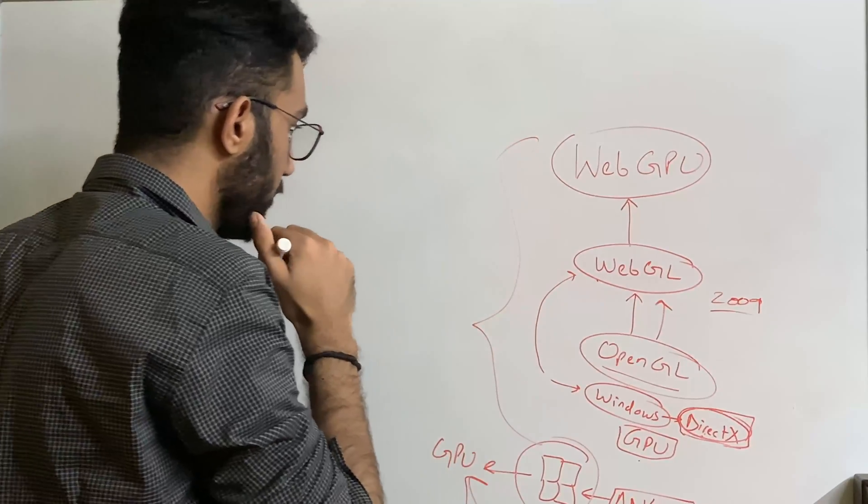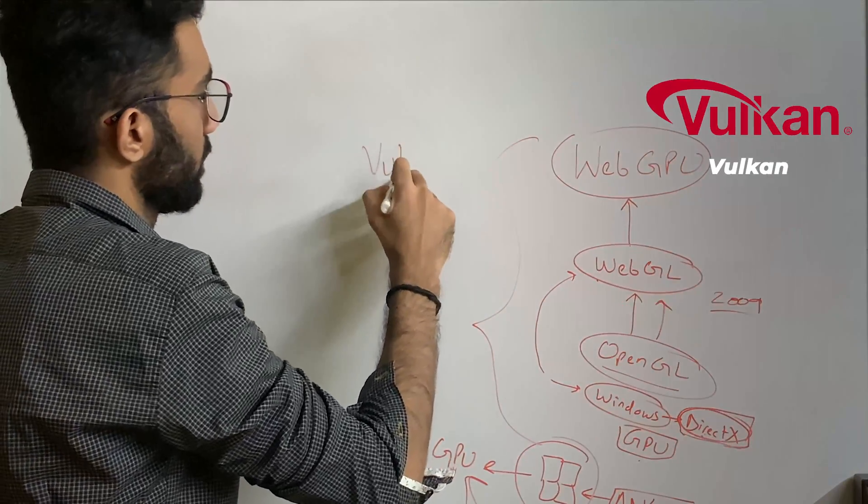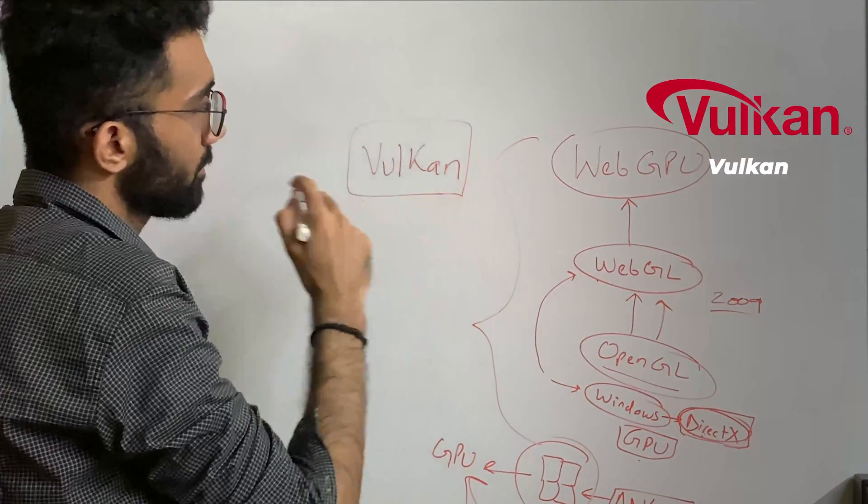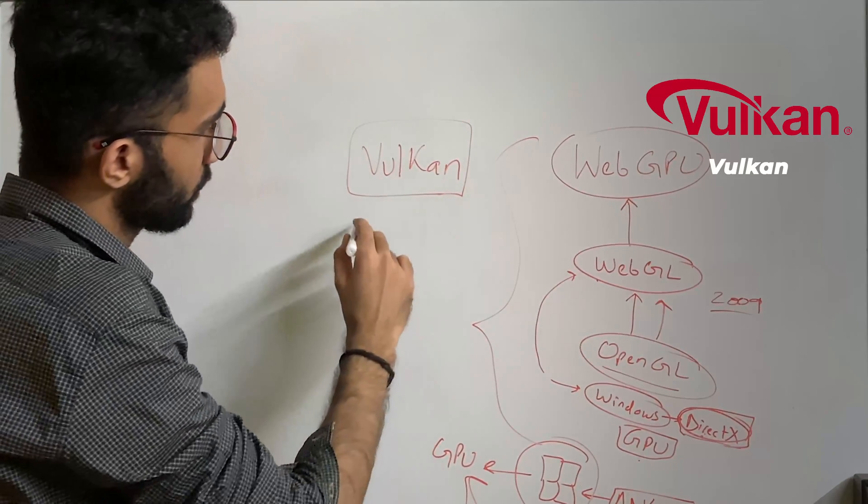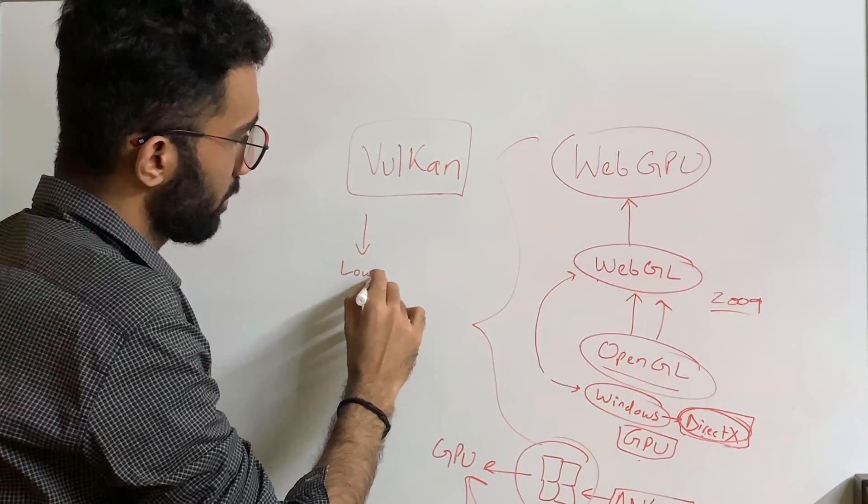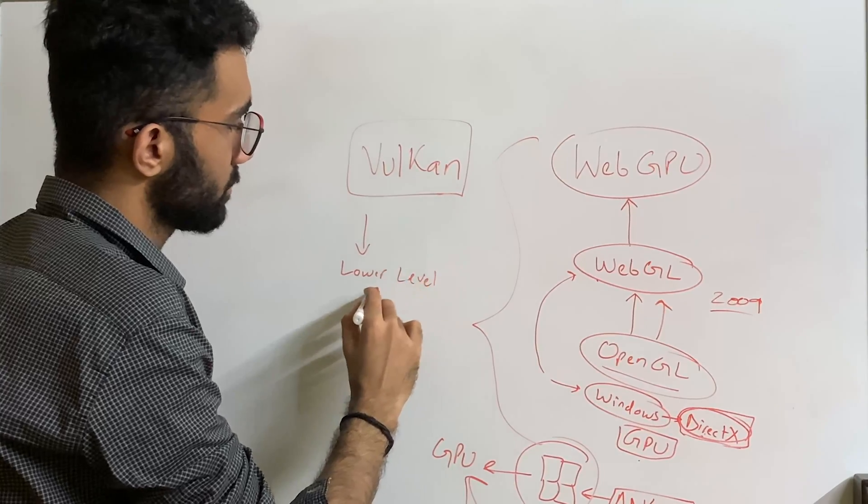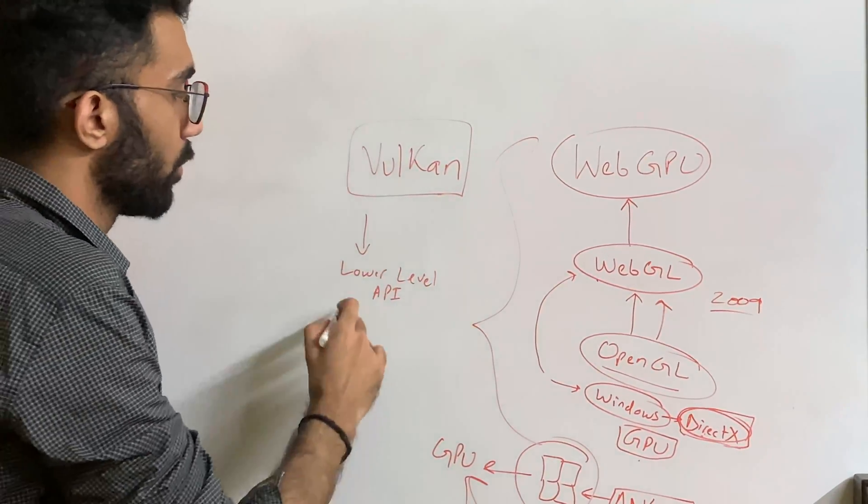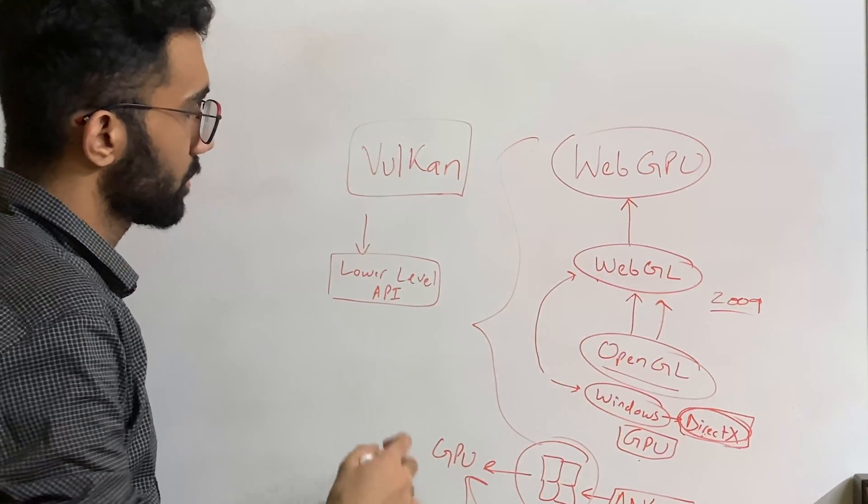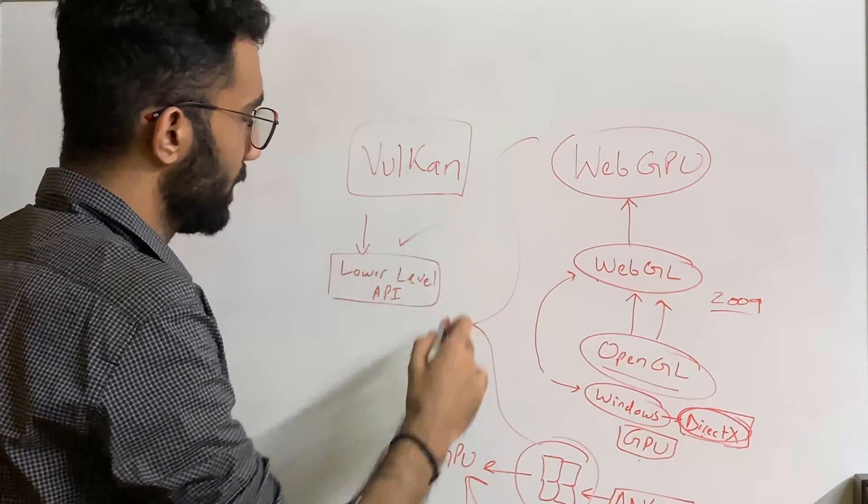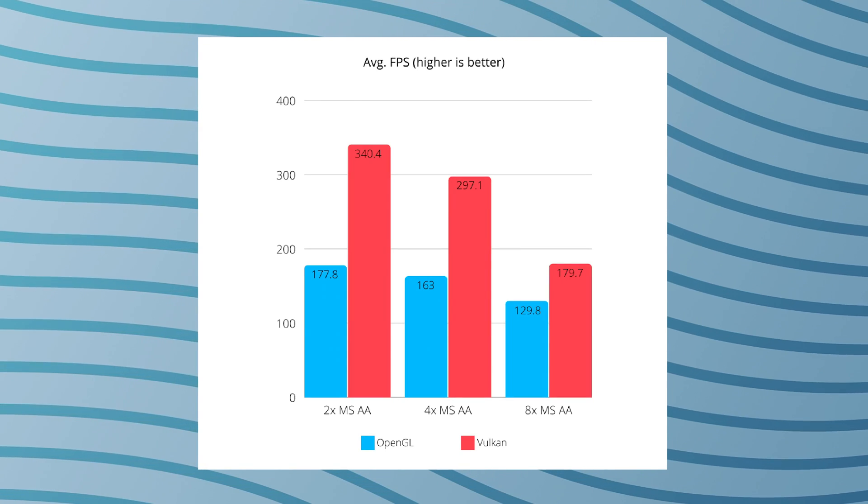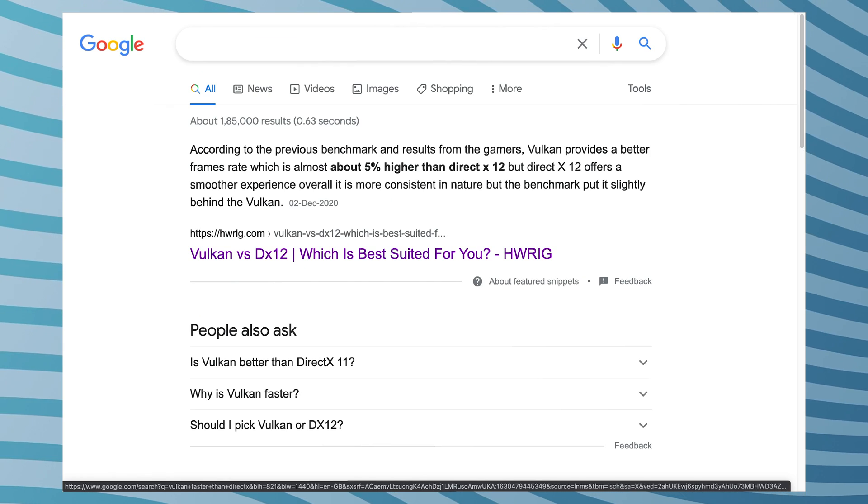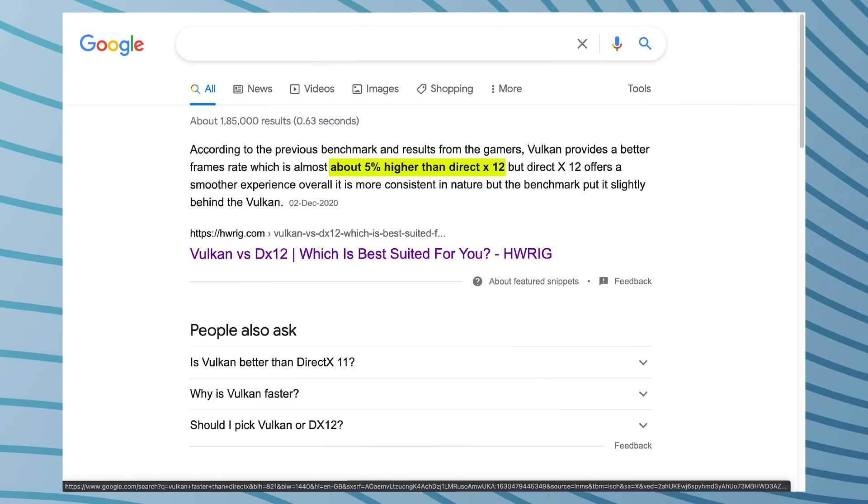So this standard right here was designed in such a way that this was even lower level access in terms of API, so it could access even more features and it could be used to build even more features and functionalities sitting on your GPU. Plus, this was absolutely a performance beast. It was faster than OpenGL, it was faster than DirectX, it is supposed to be faster than DirectX and so on.